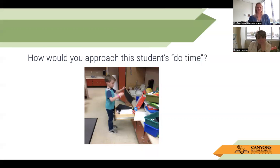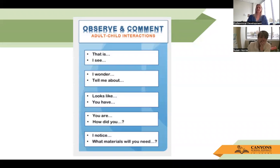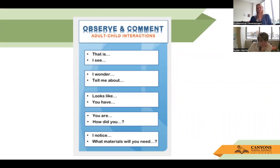Think about a student in your classroom who plays independently often — how can we change that to make it more intentional? This is the observing comment poster — you should have this in your kindergarten classroom. This is more for you than the students; it's an anchor for you as the teacher. When engaging in student play and you don't know how to approach it, these are things you can observe and comment on across all six areas to be intentional. When students see you in an area, don't be surprised if a few follow you — because they want to be where you are. Use that opportunity to build relationships.